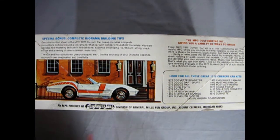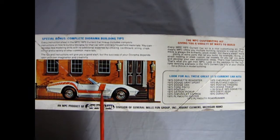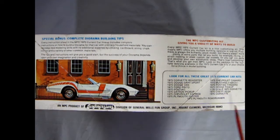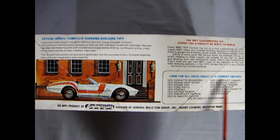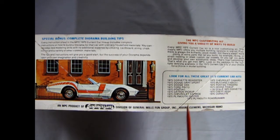On this side of the box we get a special side view of our Corvette showing the decal location and a great tip on making a background for your diorama. And then we have look for all these great 75 current car kits.